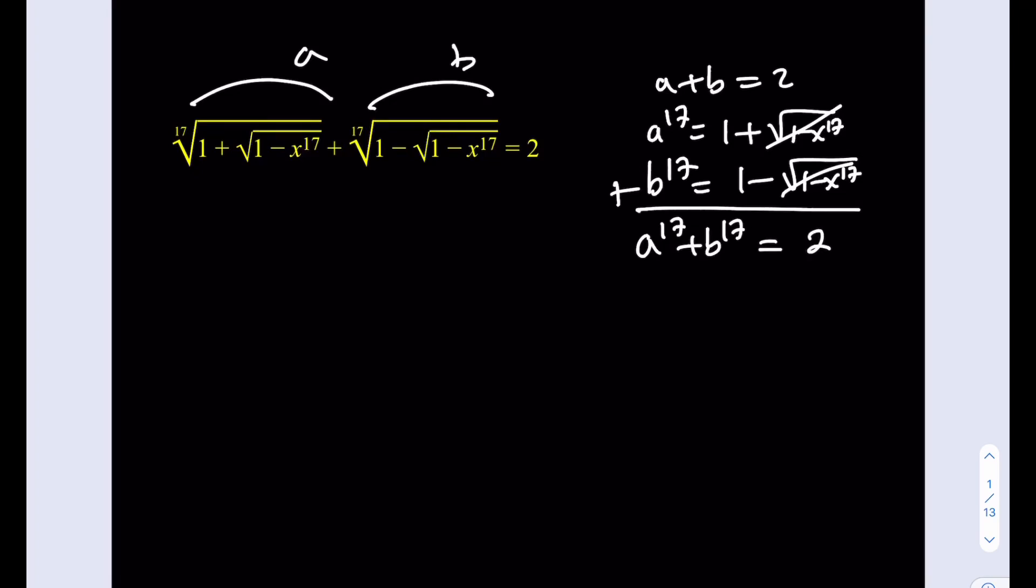So we get an interesting system from here, but if you try to solve it, it's going to be real painful, you know, just by algebraic means. One of the things you can do is you can substitute, replace b with 2 minus a, but you're going to have to deal with 17th powers. So that's going to be real complicated. But instead of that, and we've used this method before, you can use inequalities to solve an equation.